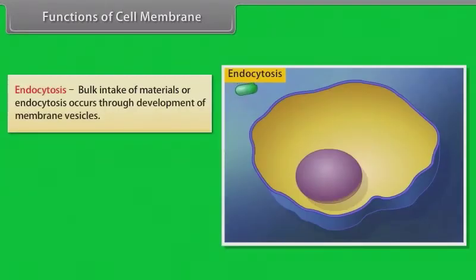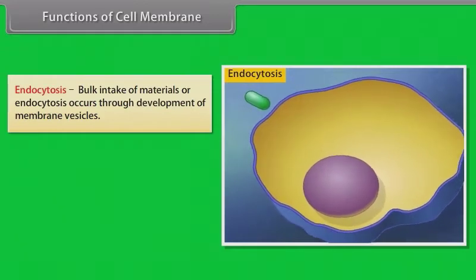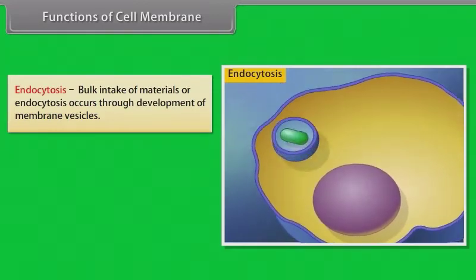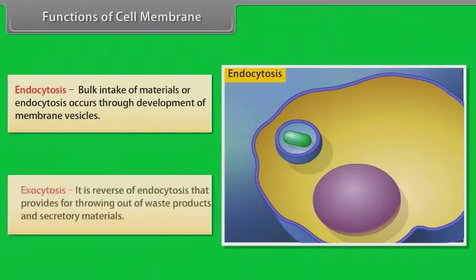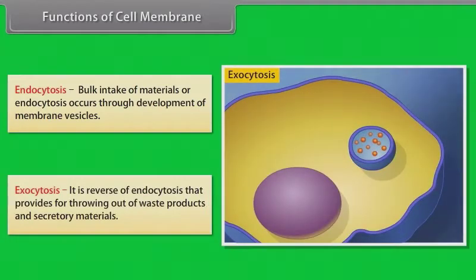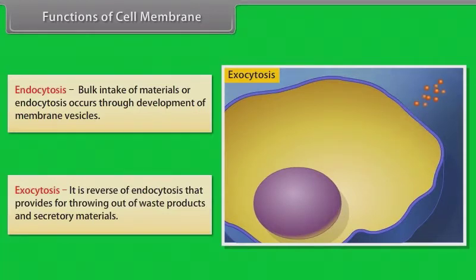Endocytosis: bulk intake of materials or endocytosis occurs through development of membrane vesicles. Exocytosis: it is the reverse of endocytosis and provides for throwing out of waste products and secretory materials.